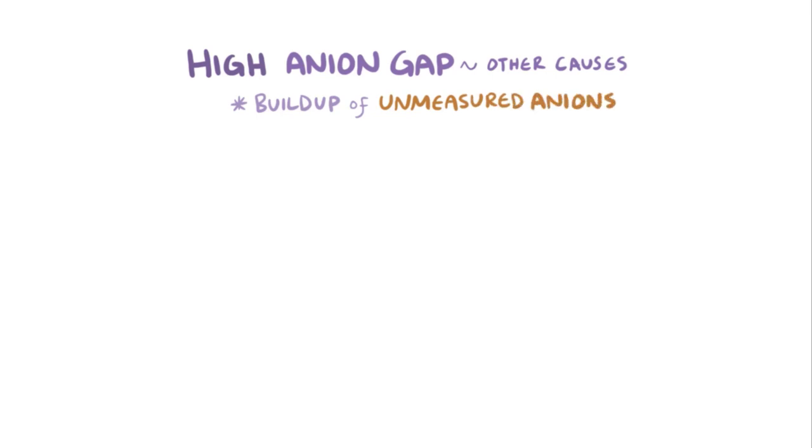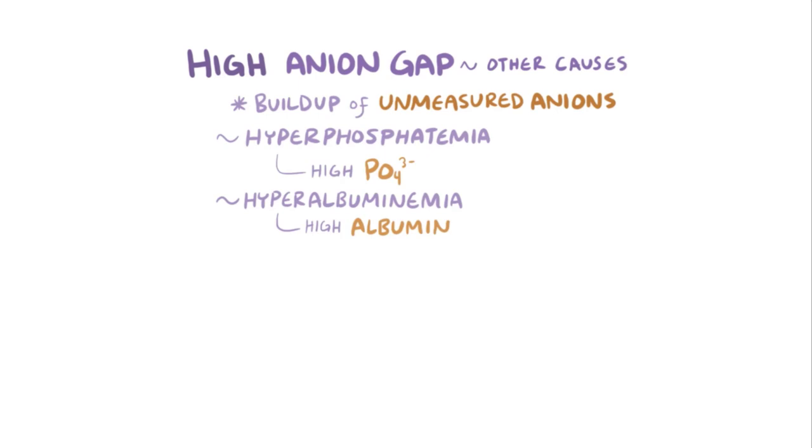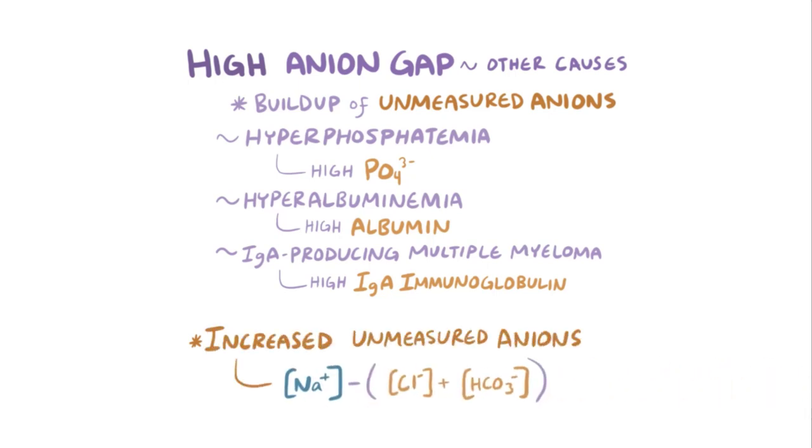A lot less commonly, a high anion gap might be unrelated to a metabolic acidosis, and instead might reflect a buildup of some of the unmeasured anions. Some examples are hyperphosphatemia or increased plasma concentration of phosphate, hyperalbuminemia or increased plasma concentration of albumin, or IgA producing multiple myeloma, where IgA immunoglobulin, which is an anionic protein, is produced. To keep the total charge in balance, when there are more unmeasured anions around, the bicarbonate and chloride concentrations decrease. As a result, the anion gap goes up.